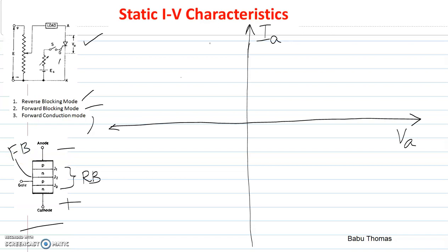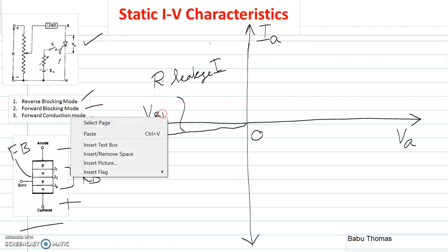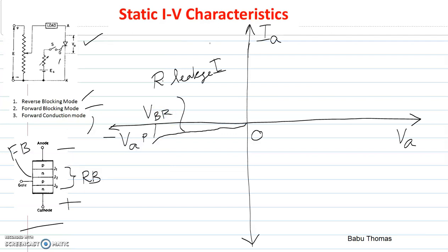As in the case of a small PN junction diode, the reverse characteristics we see here are similar to the reverse characteristics of a thyristor. From the center point O, when we try to increase the voltage in the negative direction — that is, minus VA is applied across the device — it results in a small flow of reverse leakage current, shown from O to P. When we further increase the negative voltage, it results in an avalanche breakdown of the system.